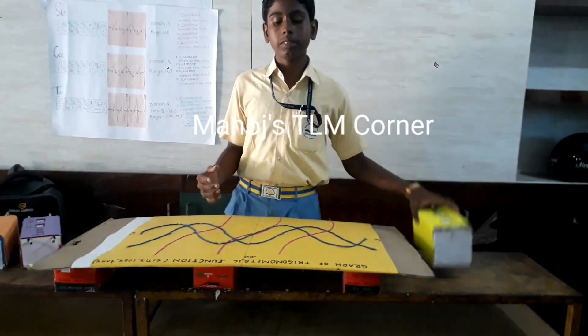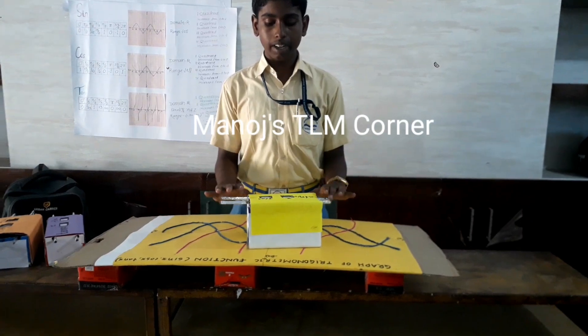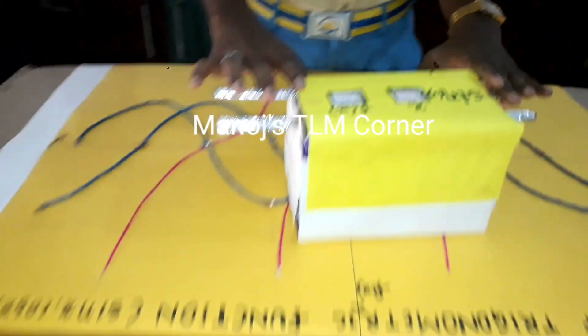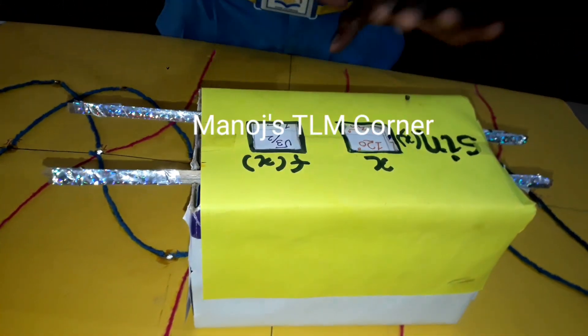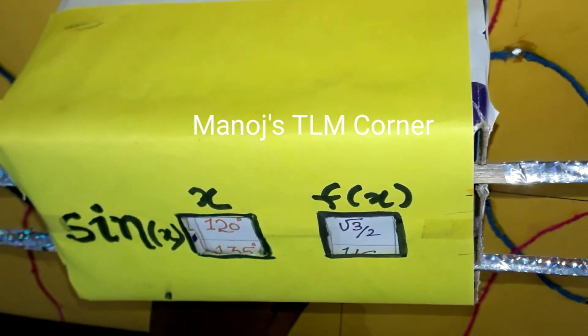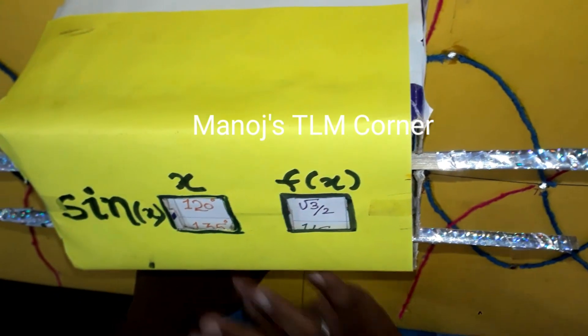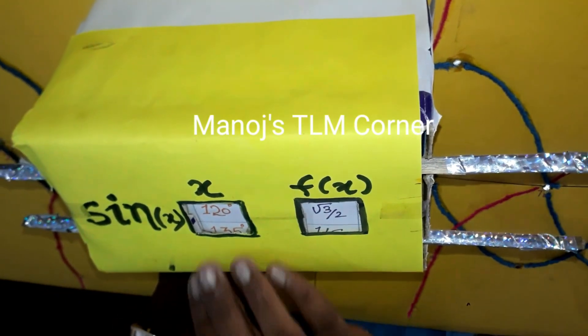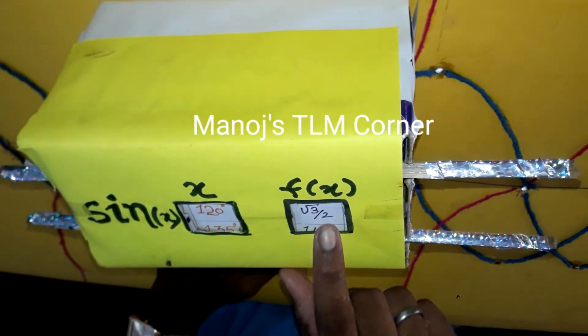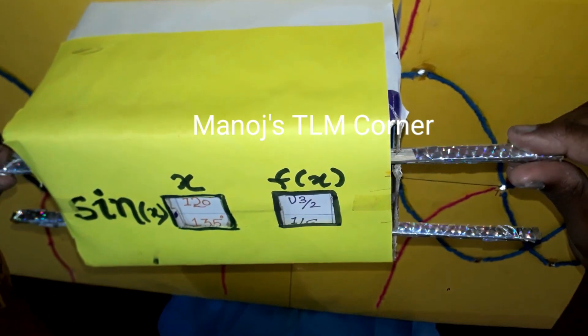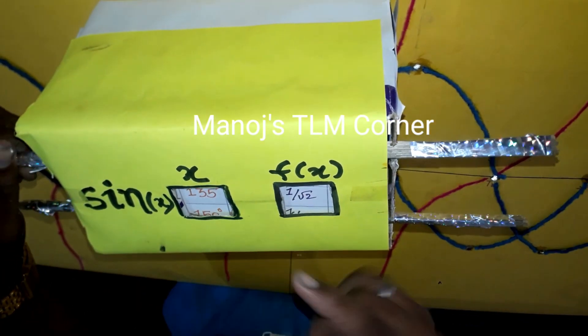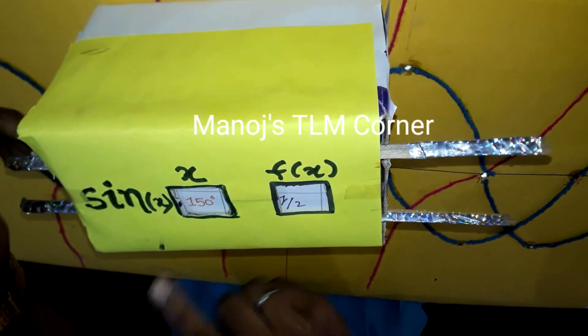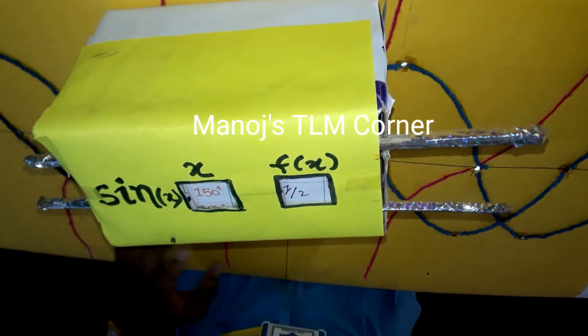Let me show the function of sine. All children are very attracted to playing games, so this is a type of game. When they try to memorize the values: sin 120° = √3/2, sin 135° = 1/√2, sin 150° = 1/2 — we can easily memorize these things.